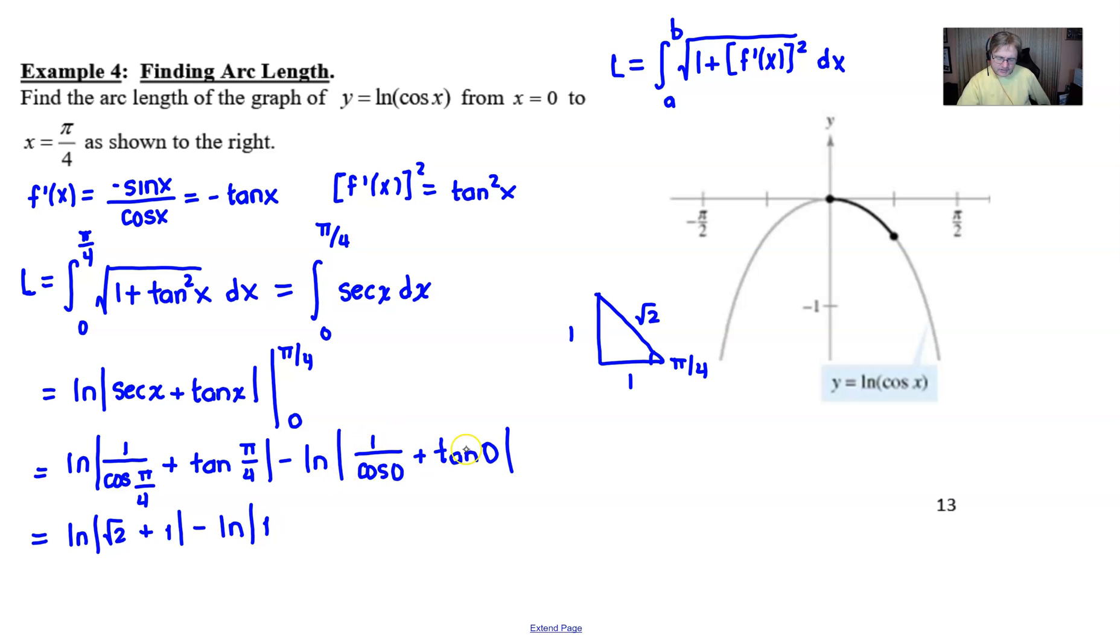And of course, the tangent of 0 is 0. But all of this is going to be the natural log of 1, which is 0 anyway. And so you're really just left with the natural log of the quantity. And I could reverse the 1 and the square root of 2 to make it a little bit more clear of what's in the radical and what's not. And I can take away the absolute values because I know that that quantity is positive. And so this is probably the best looking multiple choice answer that you might see.